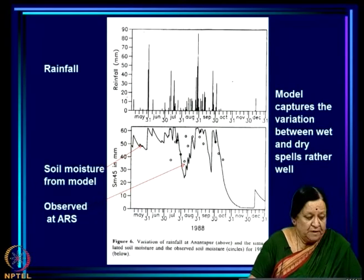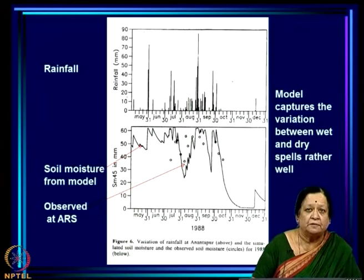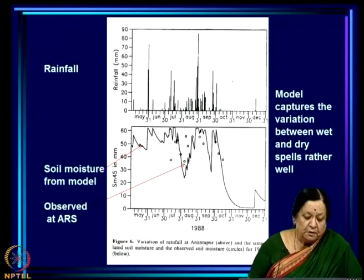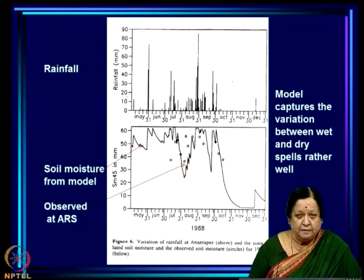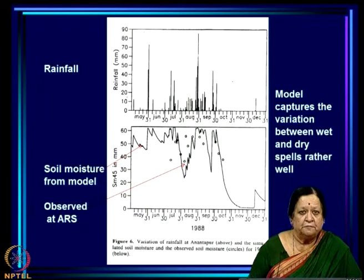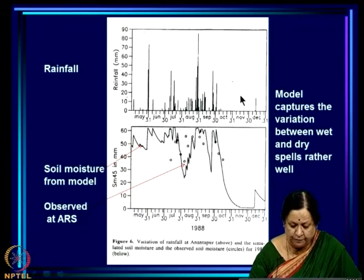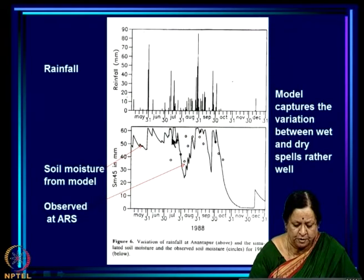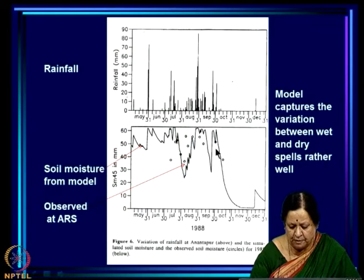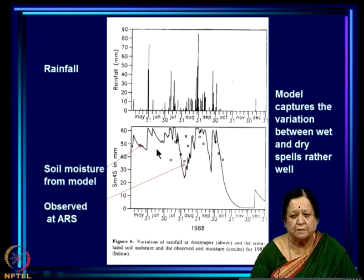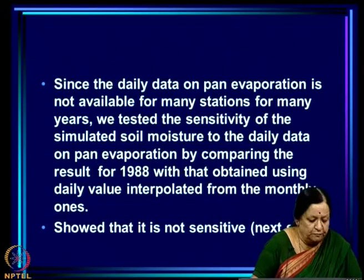Having built this model and input all parameters from literature and soil characteristics, we validated it, which is extremely important — any model must be validated for the site you are using it for. For 1998, the rainfall pattern is shown at the top, and the simulated soil moisture is compared with observed values (circles). The model captures the big dip, the build-up, and subsequent decrease very nicely. We concluded the model is good enough to capture variation between wet and dry spells.